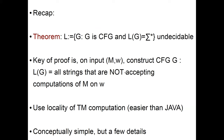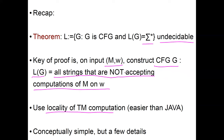Let's recap. We proved that the language of context-free grammars whose language is sigma star is undecidable. The key of the proof was: on input MW, you can construct a context-free grammar whose language consists of all strings which are not accepting computations of M on W. We used locality of Turing machine computation and the power of context-free grammars. This proof is easier than if we were working with Java, because we exploit the locality of Turing machine computation.